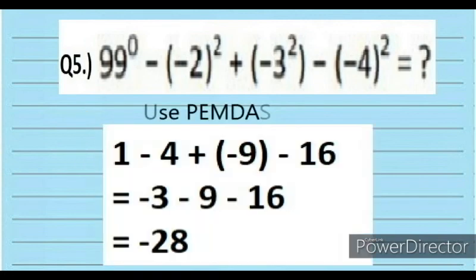Solution using PEMDAS rule: 1 minus 4 plus negative 9 minus 16. This simplifies to: negative 3 minus 9 minus 16, which equals negative 28. The answer is letter A, negative 28.